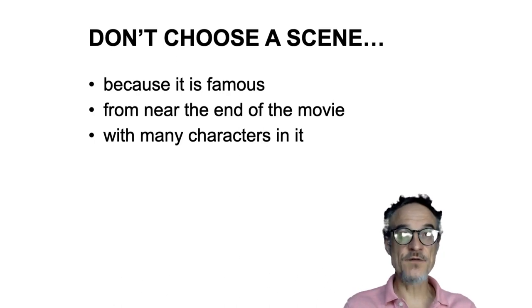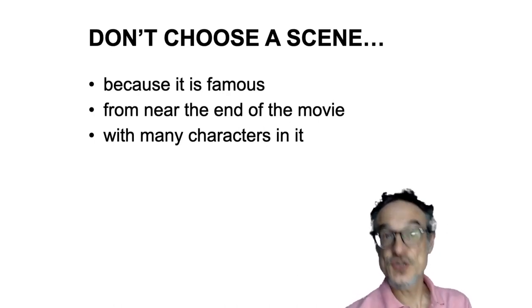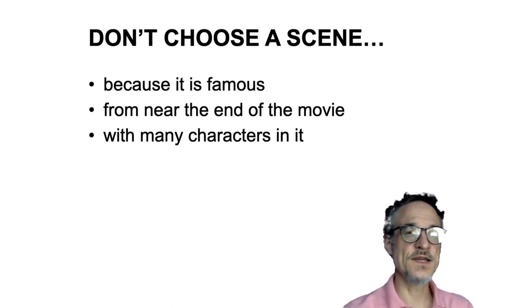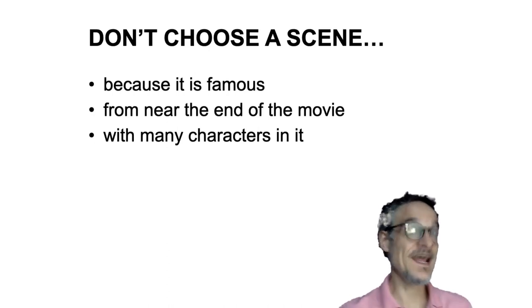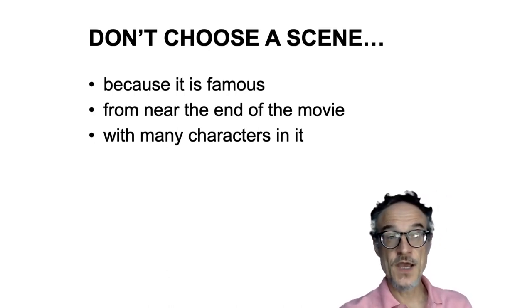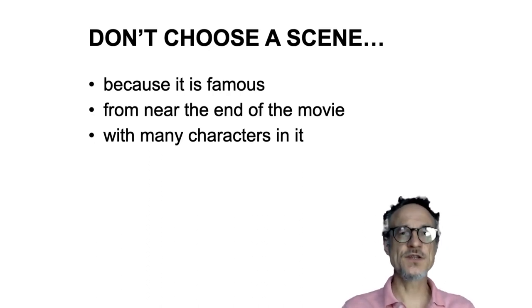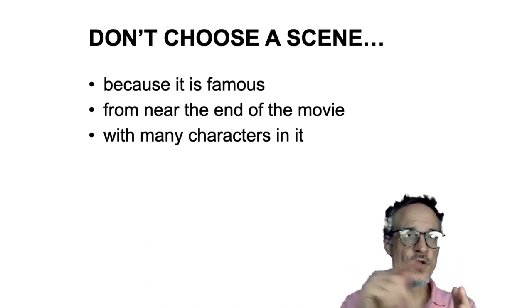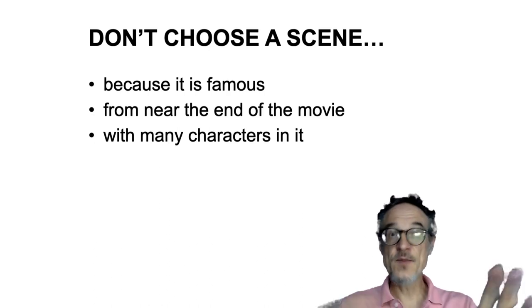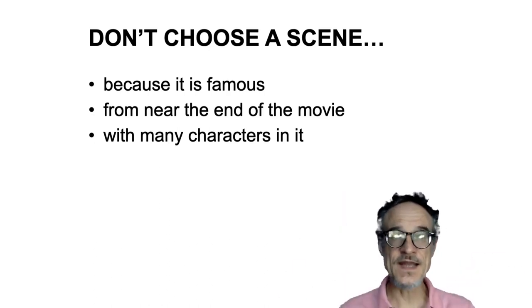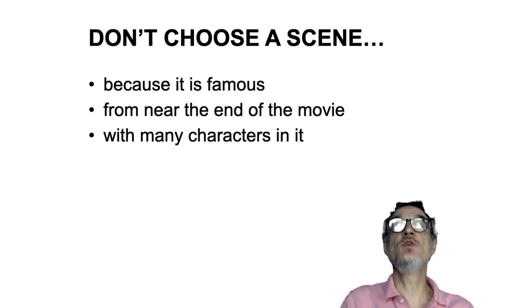Some famous scenes are famous because they're good scenes, but if it's a good scene, choose it because it's a good scene — don't just choose the most famous scene in a movie. Don't choose a scene from near the end of the movie; it may be difficult to understand because it has lots of background from the movie, and it may also give away the main ideas. Don't choose a scene with many characters: two people have one relationship, three people have three relationships, four people have six, five people have ten. As you get more people it gets much more complicated, and also just remembering who is who. Scenes with few characters are good.